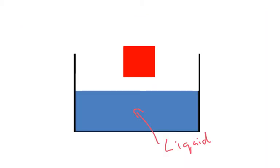Ok so here I've got a container of blue liquid and I'm going to place the red block here inside. The block is going to float but as it floats it's going to displace some of the liquid, so as it's going in some of the liquid is going to move to the side like this.